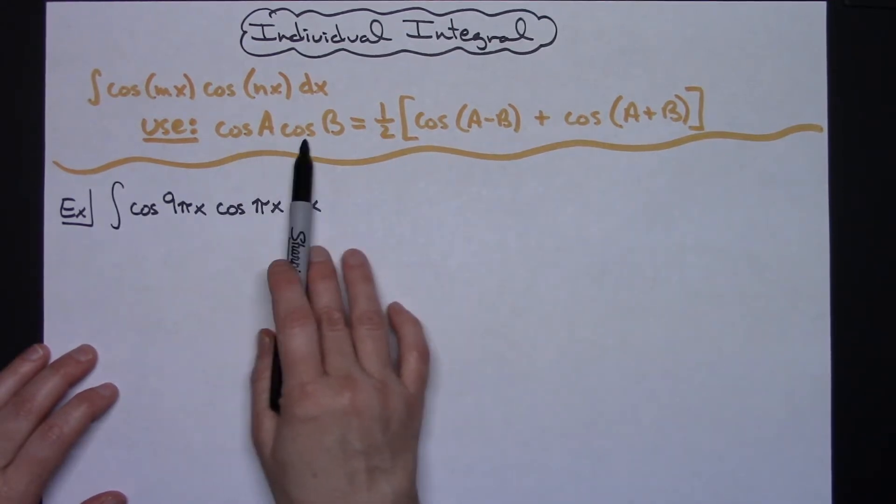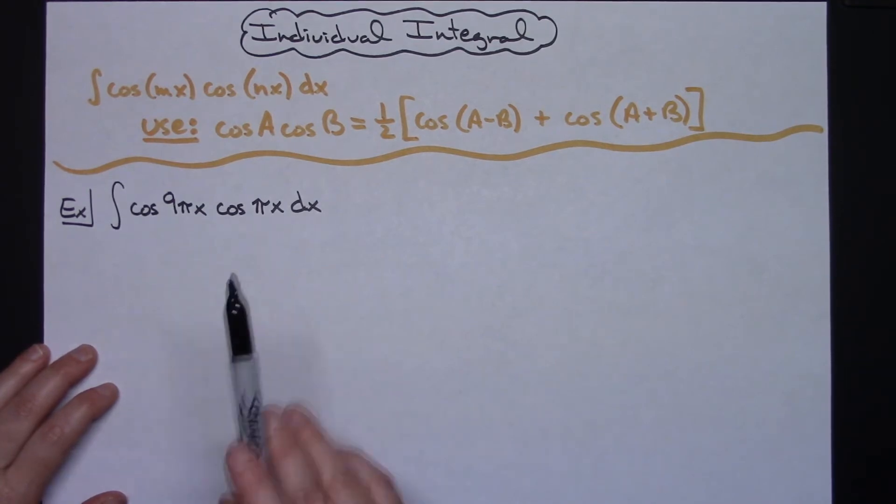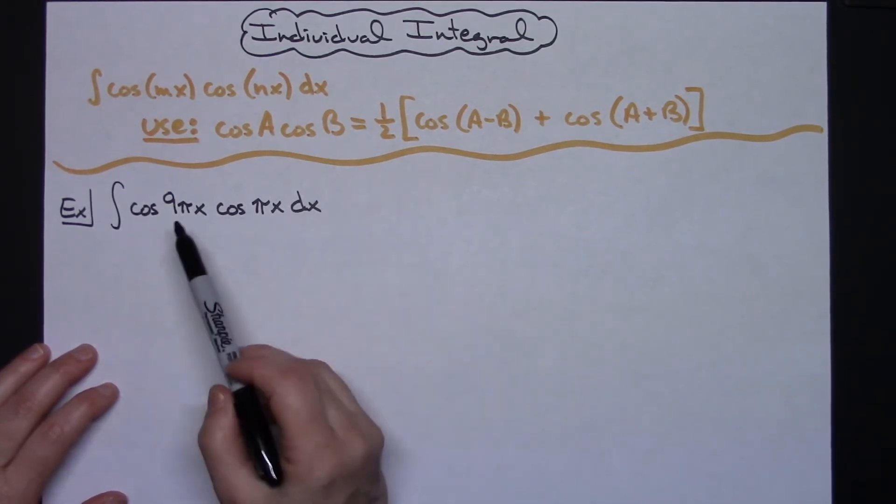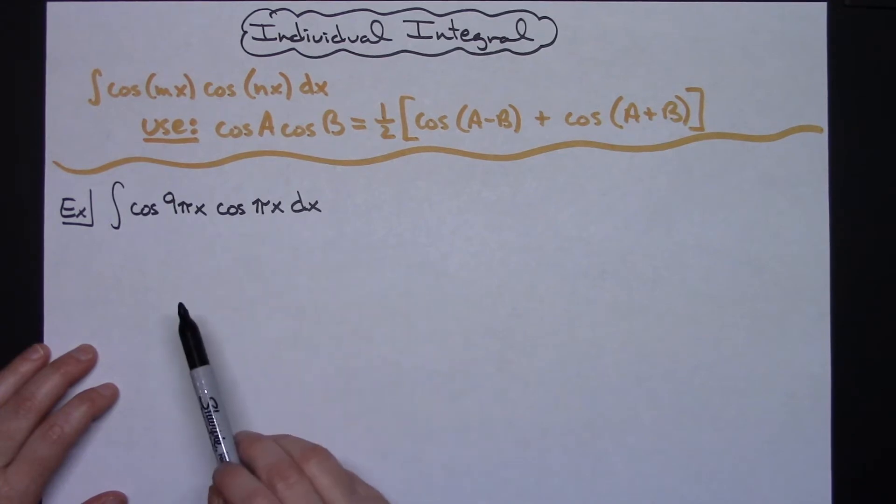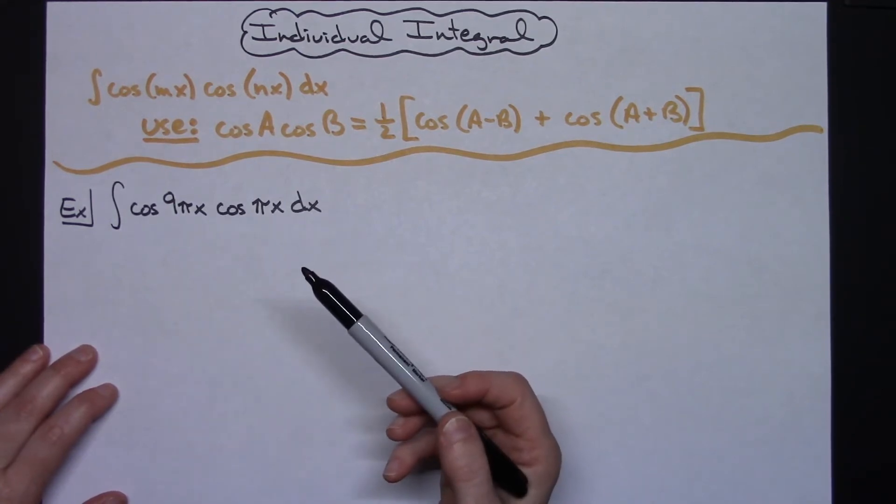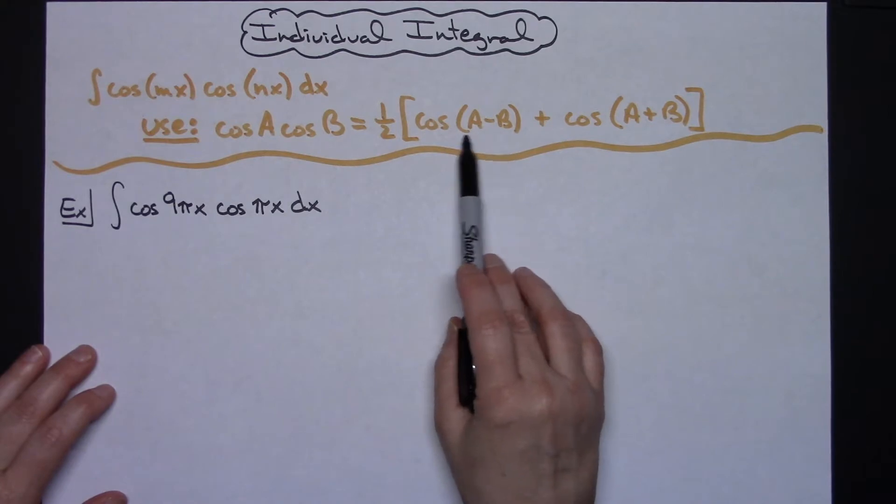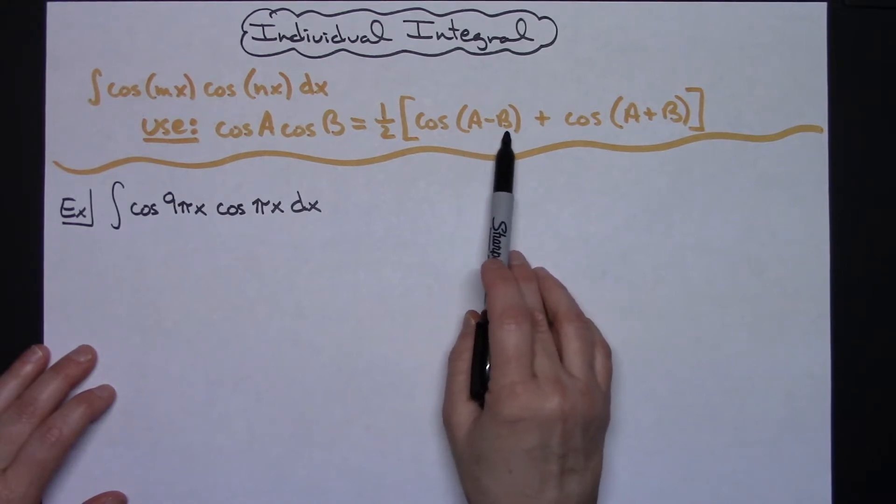Now the product of two things can be multiplied in any order I want, so I get to select which of these two I want to be A and which I want to be B. The one thing you do have to pay attention to is you are going to be taking A minus B.